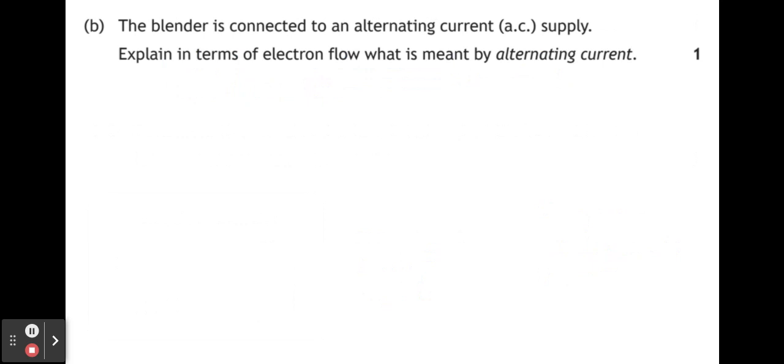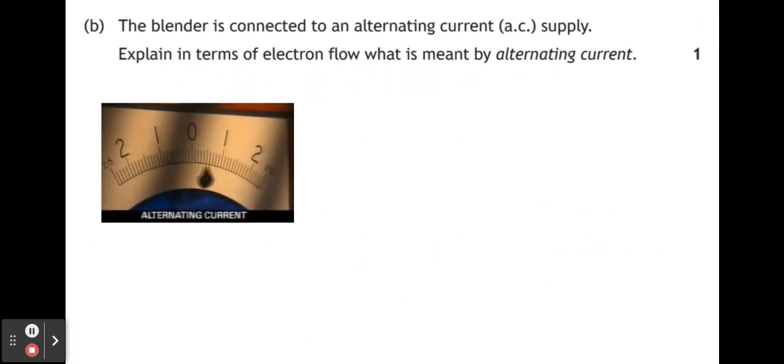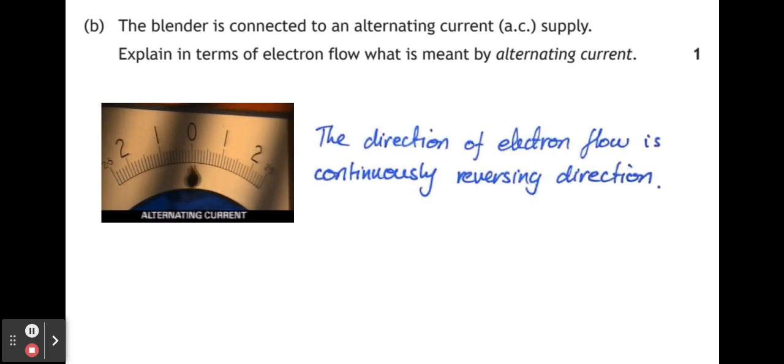Part B. The blender is connected to an alternating current AC supply. Explain, in terms of electron flow, what is meant by alternating current. Well, alternating current is where the electron flow is continually reversing direction.